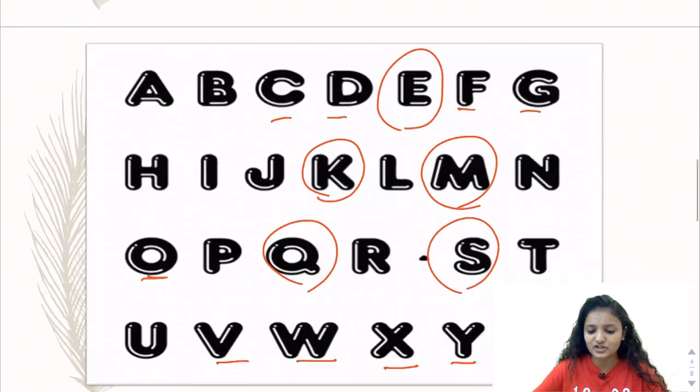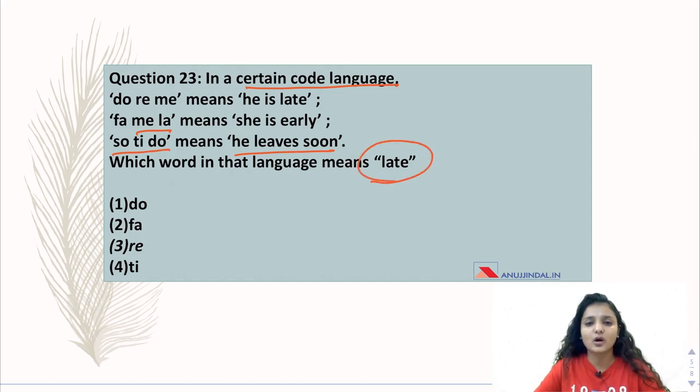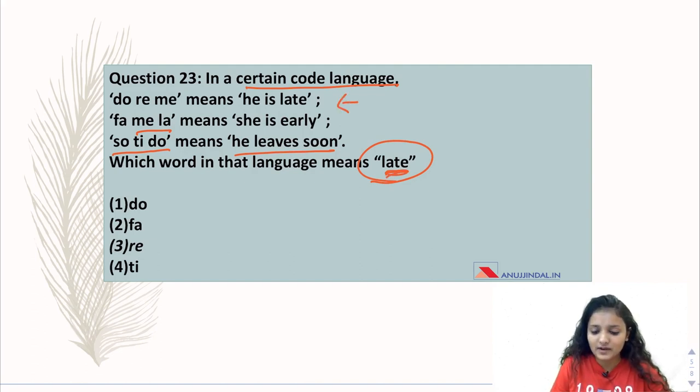Question 23: In a certain code language, 'do re me' means 'he is late', 'fa me la' means 'she is early', and 'so ti do' means 'he leaves soon'. Which word in that language means 'late'? To solve these questions, identify the sentence where the word is located. If you have to find late, then late is located in 'he is late'. Now you will keep a base sentence.